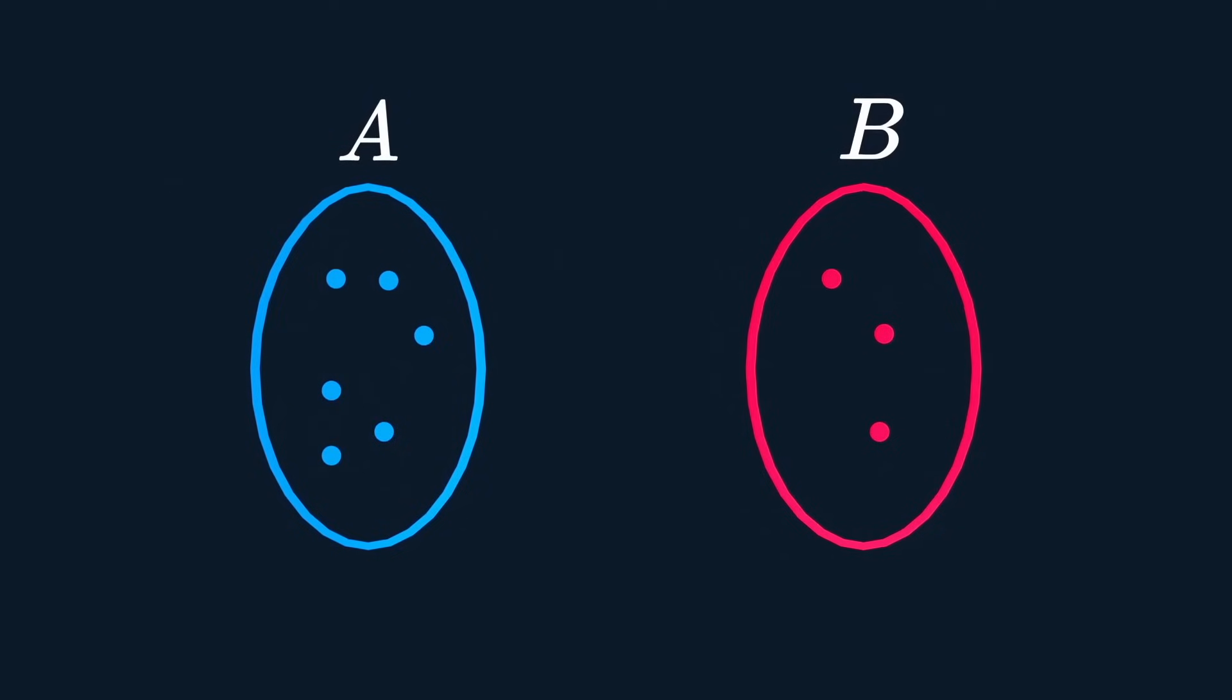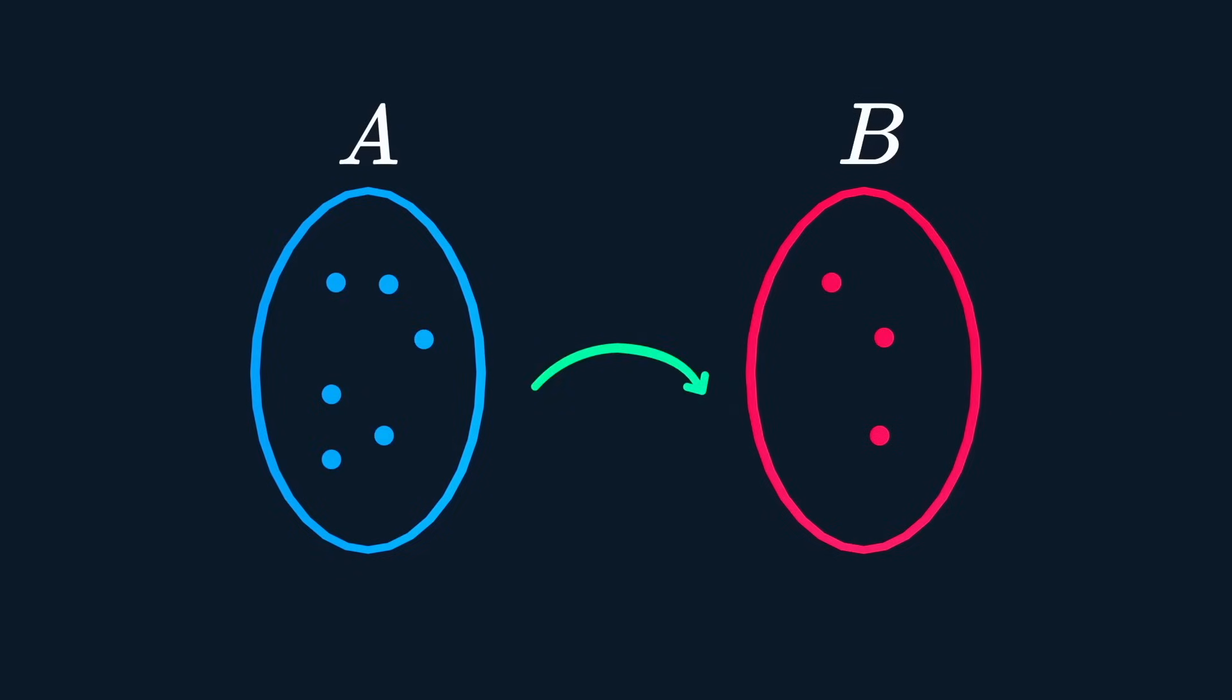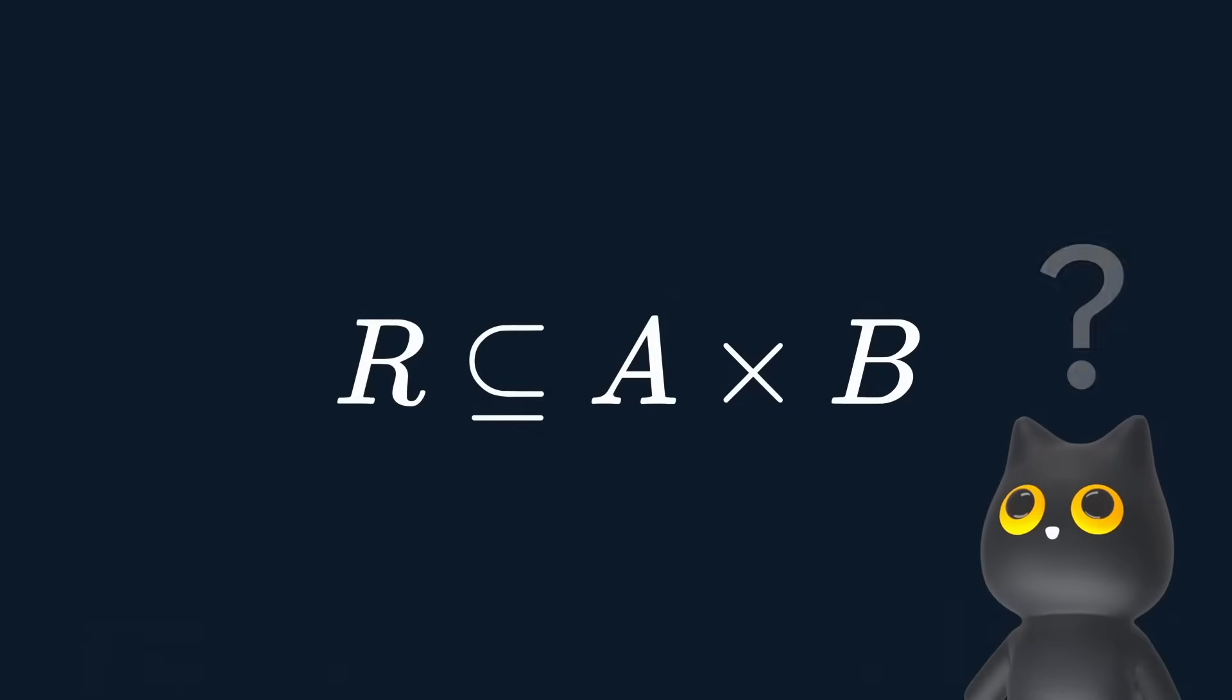Alright, the elements in the sets are getting a bit lonely. Let's go one step further and relate two sets together. That's right, this is R, a binary relation. You can write it with R being a subset of A multiplied by B. Wait, you can multiply sets? Well, actually, no.